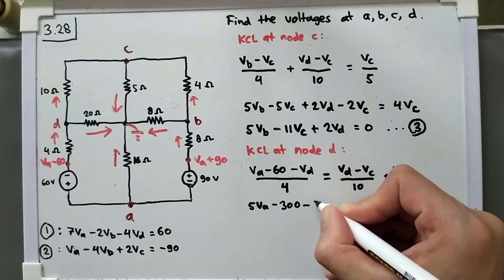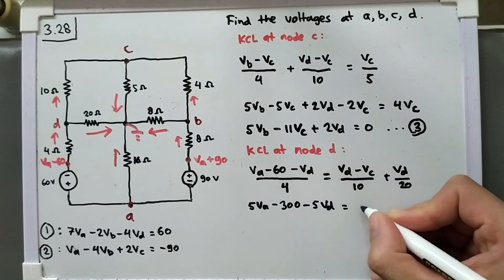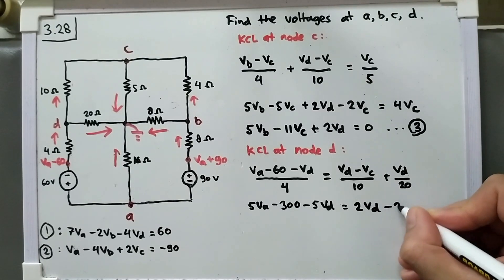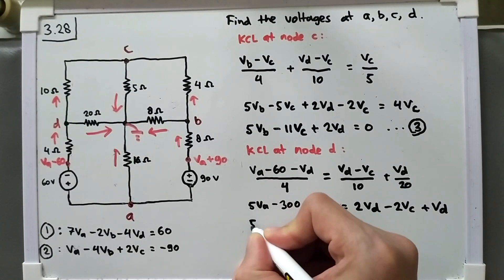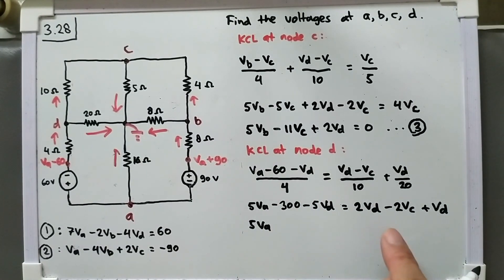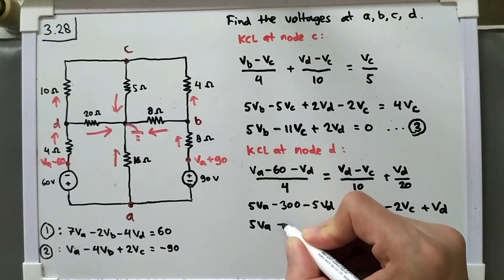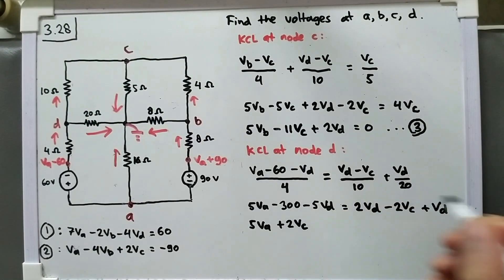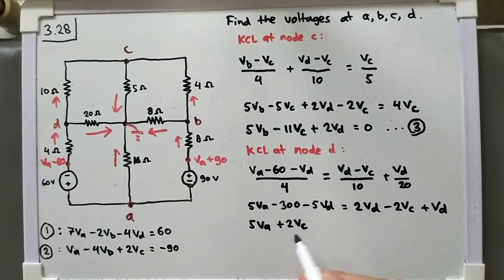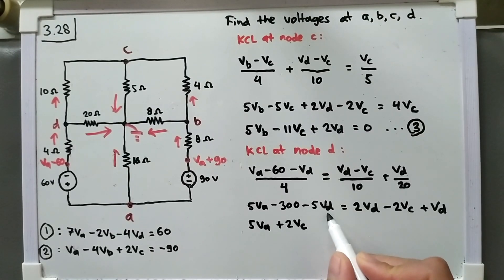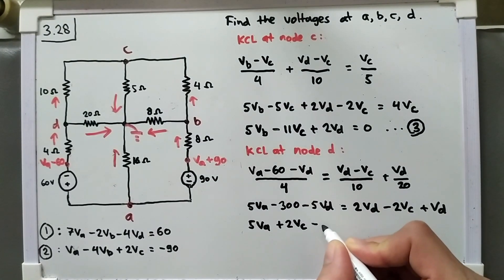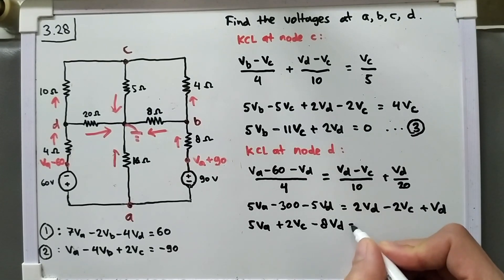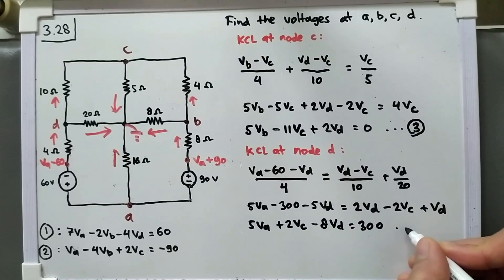Moving 2VC to the left-hand side gives plus 2VC. For VD: minus 5VD minus 2VD minus 1VD gives minus 8VD. Equation number 4: 5VA plus 2VC minus 8VD equals 300.